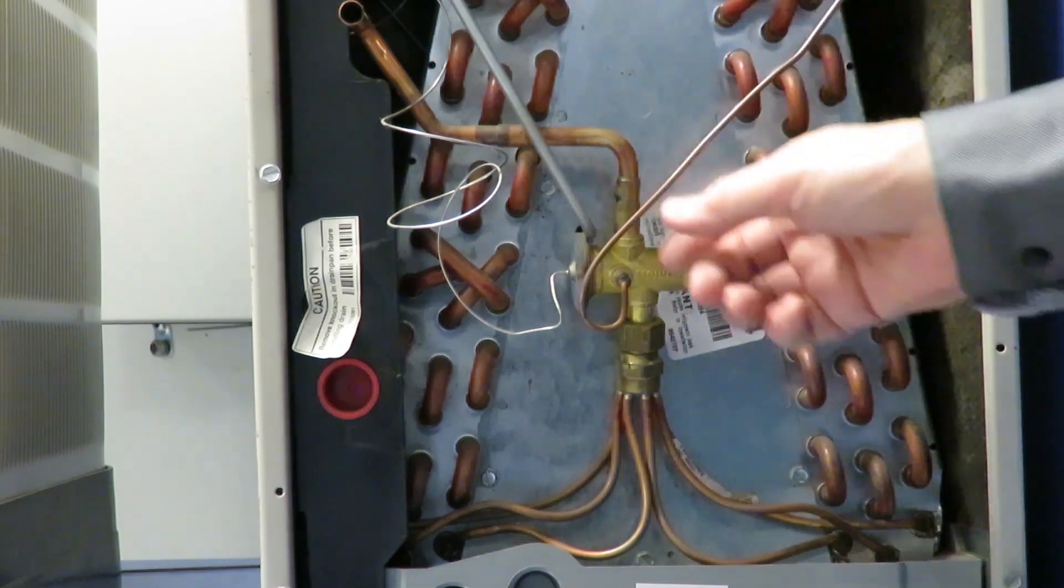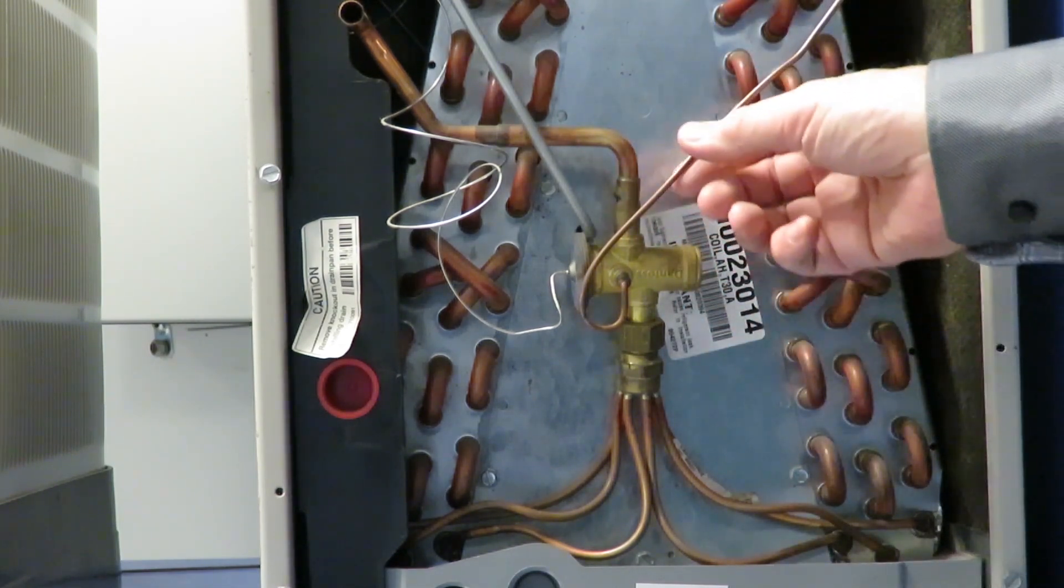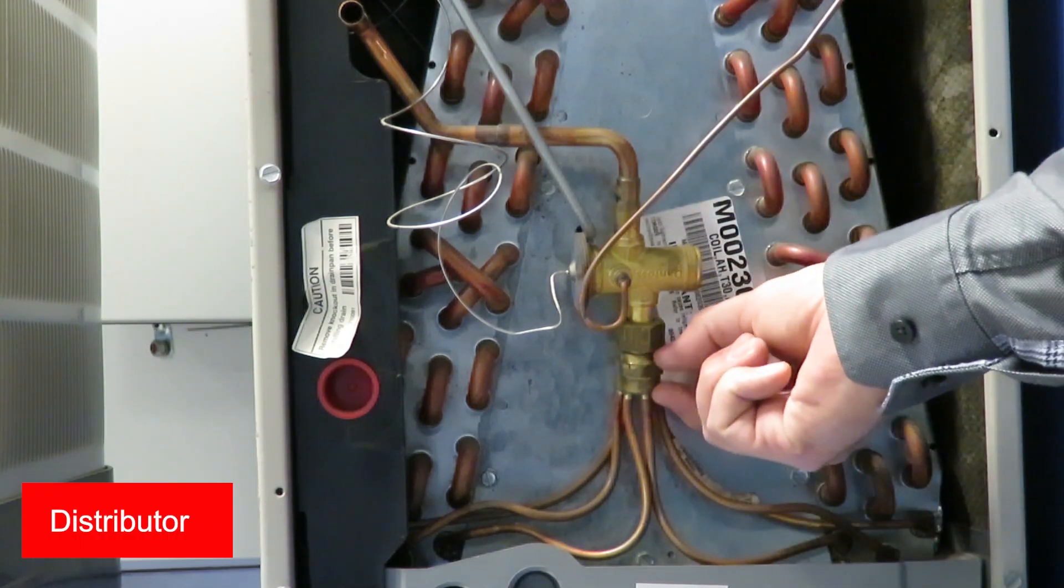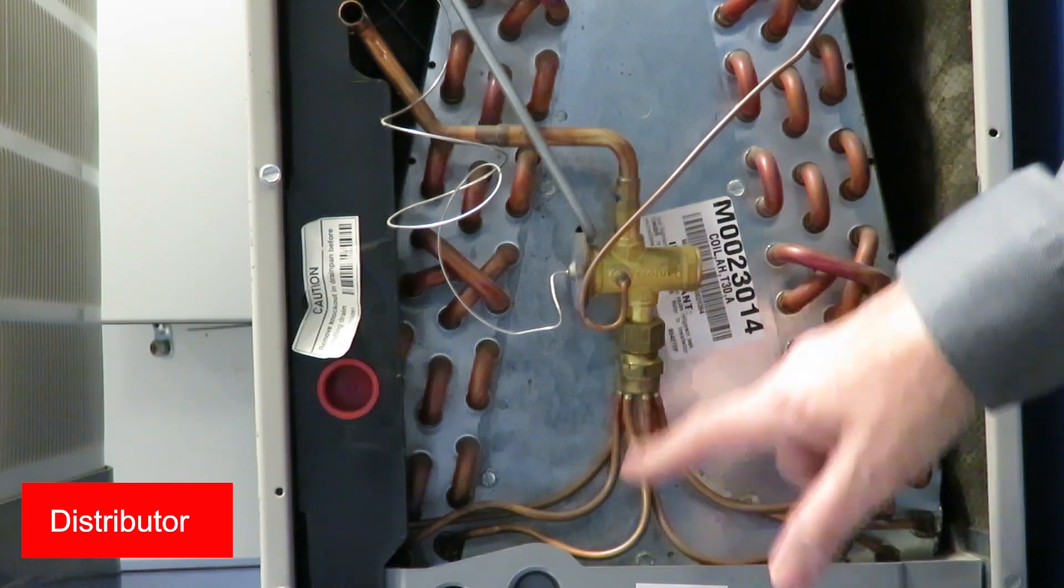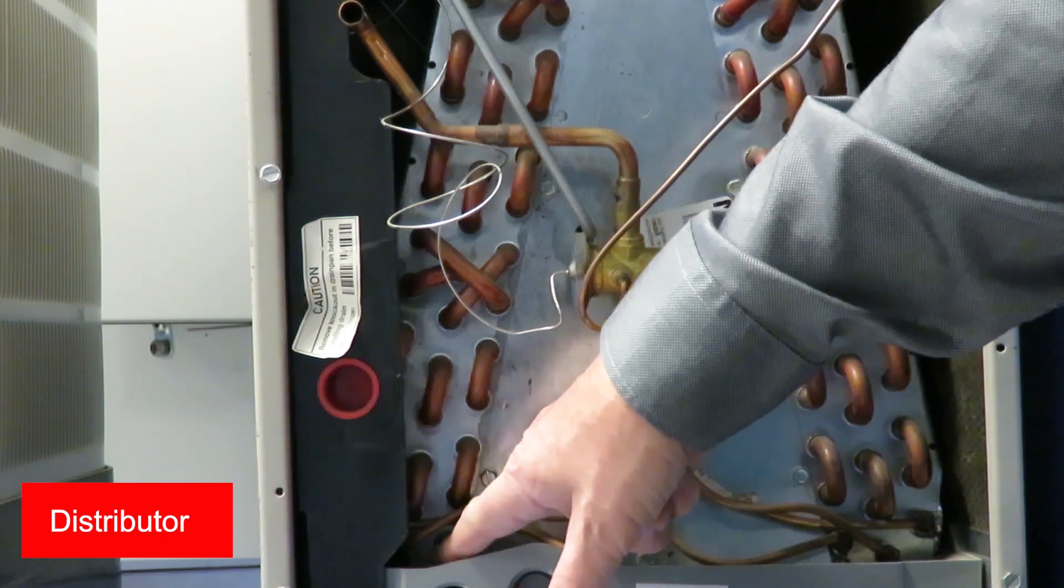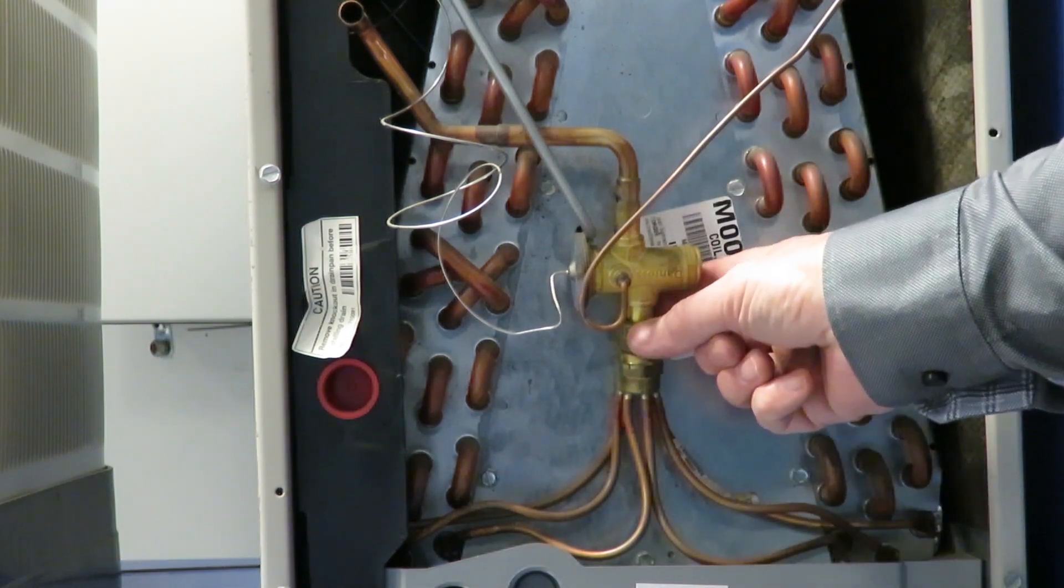We will show you later on in another close-up where that is put. Then we have the outlet. This is a separate component, a distributor you buy. You braze in your smaller copper tubes that will connect to the evaporator inlet, and then this is screwed on the valve.